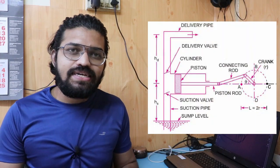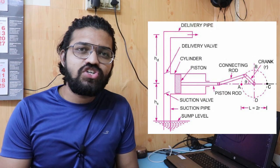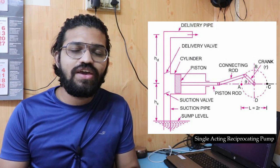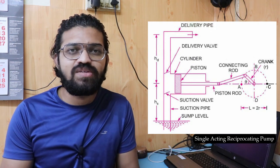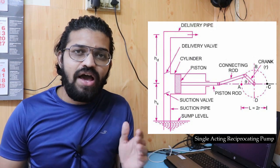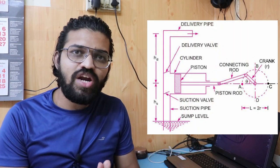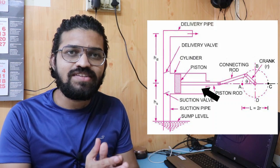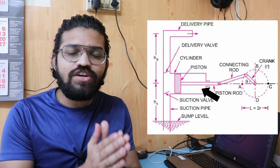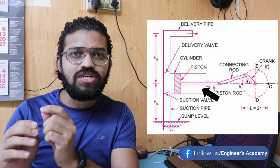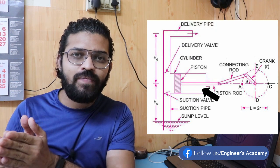Here you can see the representation of the single acting reciprocating pump. We have learned its construction, working, and the different components. This single acting reciprocating pump consists of a cylinder-piston assembly. The piston is connected to the piston rod, and that piston rod is further connected to the connecting rod.